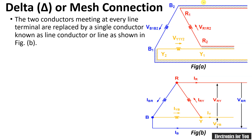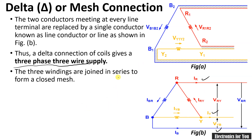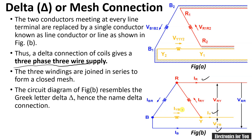The current flowing through the line terminals is known as line current. The connection looks like the Greek letter delta (Δ), and therefore it is known as delta connection. The three different currents IR, IY, and IB flow through the three phases. A delta connection provides three-phase three-wire supply, having only three phases and three supply lines. The three windings are joined in series to form a closed mesh that looks like the capital Greek letter delta, which is why it is also called mesh connection.